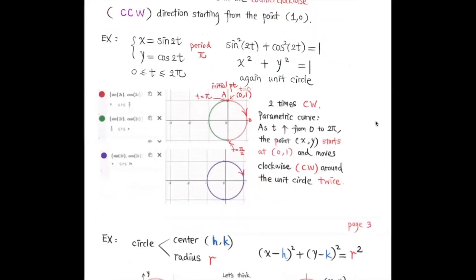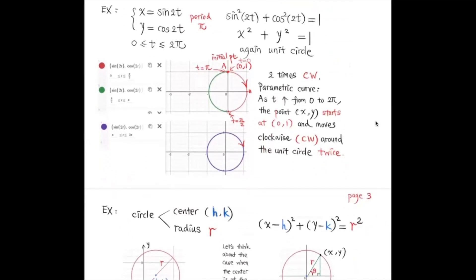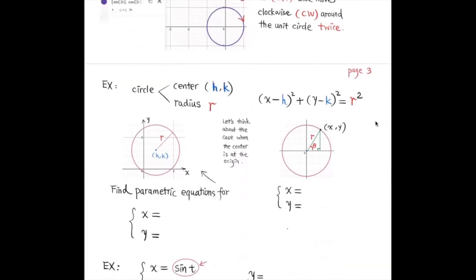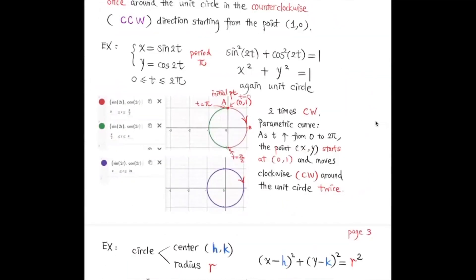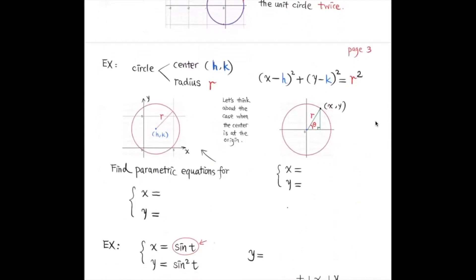Parametric equations are very useful for describing trajectories and orbits of planets — for example, the moon's elliptical orbit around Earth can be represented using parametric equations.